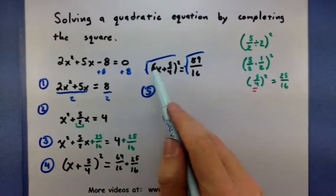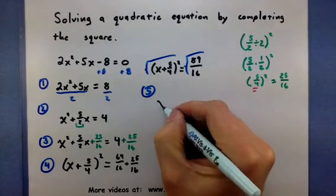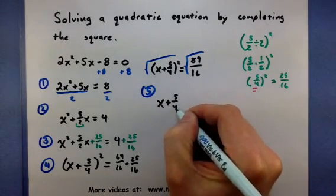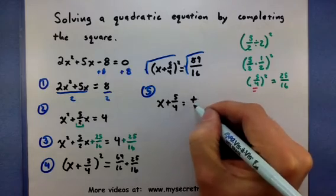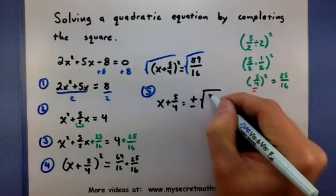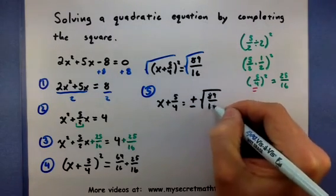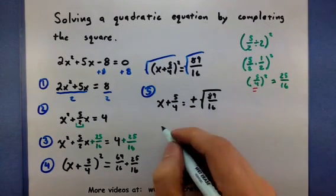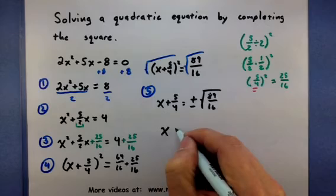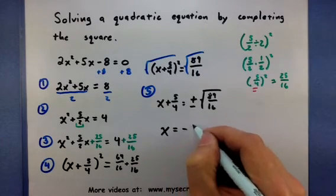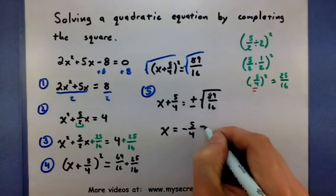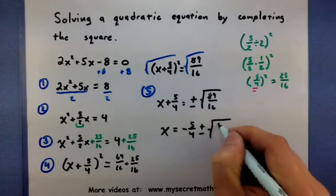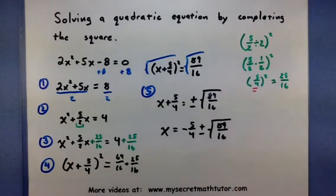Now since we're taking the square root of something that's already squared, this will give us two possibilities. It could be plus or it could be minus. We really have to keep track of both of those. Almost done. Let's move the 5 fourths to the other side now. So negative 5 fourths plus minus the square root of 89 over 16.